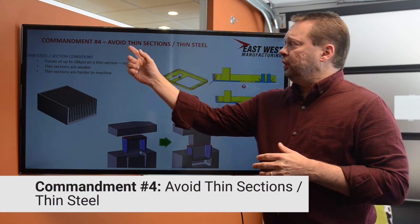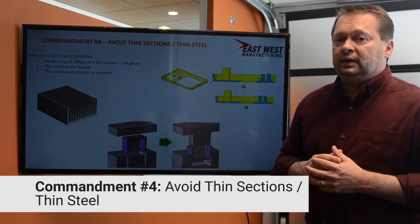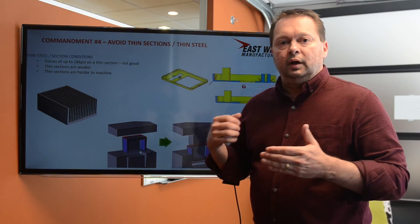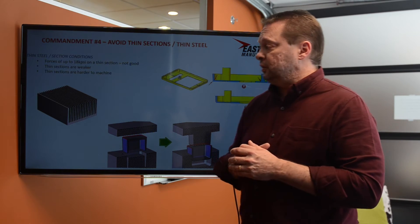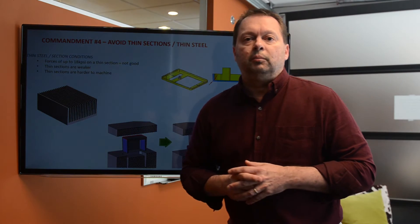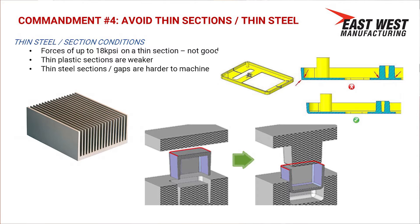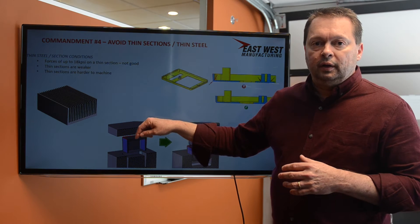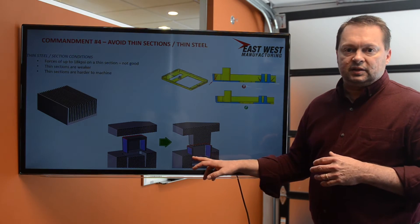The fourth commandment of injection molding is to avoid thin sections and thin steel. There's a lot of force involved in injection molding — up to 18,000 PSI. With that kind of force, if you have thin steel conditions or thin sections in the mold, it can break sections in the mold. We want to make sure we don't have thin, narrow sections in our mold which could break. Talk to your custom molder and we can make recommendations on what geometry changes need to be made. It also makes the part harder to machine, since it's difficult for an NC to get a cutter down into thin sections.